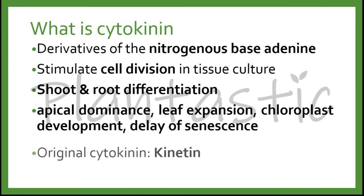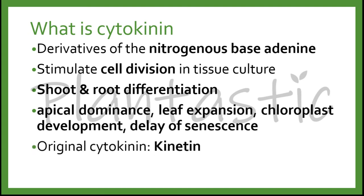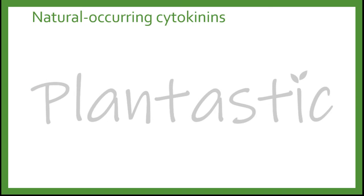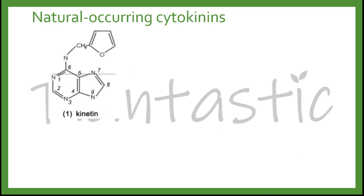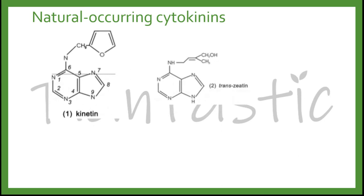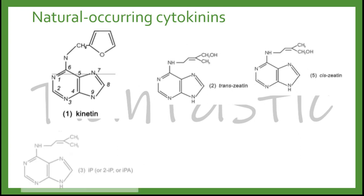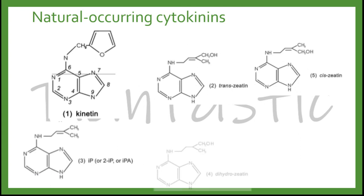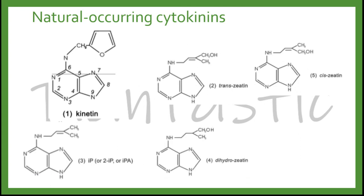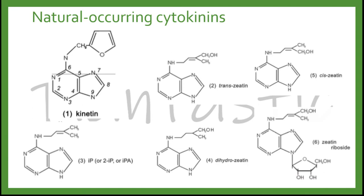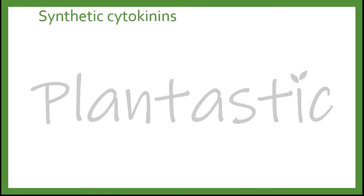The original cytokinin found was kinidine. These are the naturally occurring cytokinins: kinidine, trans-zeatin, cis-zeatin, 2-IP, dihydrozeatin, and zeatin riboside. So we can see zeatin is the naturally occurring cytokinin, as well as kinidine and 2-IP, commonly known as IP or IPA.